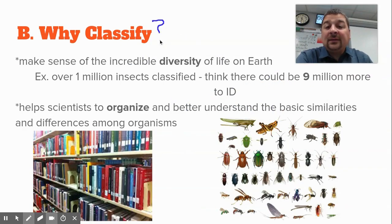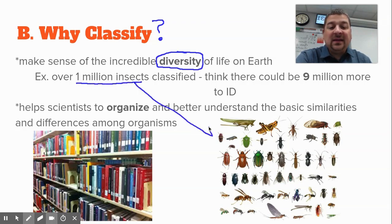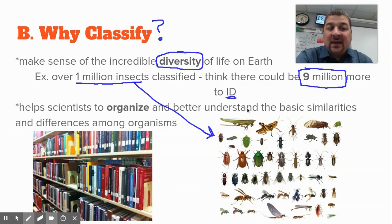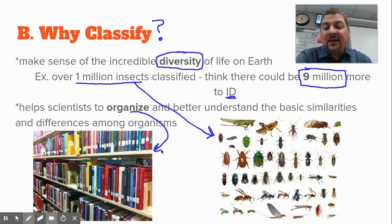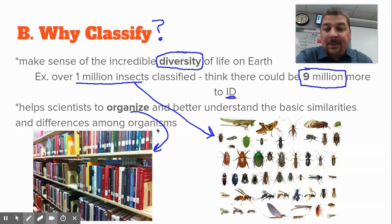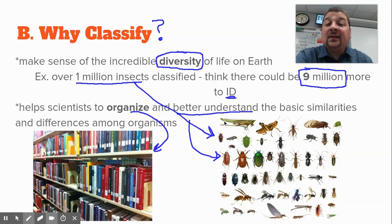Why do we classify? There is a huge diversity of life on Earth. We have over one million different insects classified — beetles, flies, wasps, grasshoppers, cicadas — and scientists think there could be up to nine million more to identify yet. We have to be able to organize those. Just like a library has non-fiction, fiction, science fiction, and autobiography sections so you can find books easier, we need to do that with all life on Earth. That helps scientists understand — if they find something and look up how it's classified, it gives a lot of information about those organisms and who they might be related to.